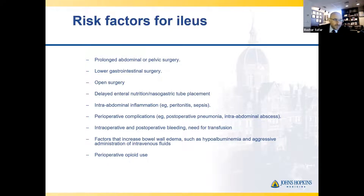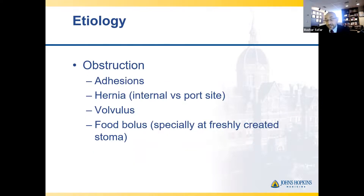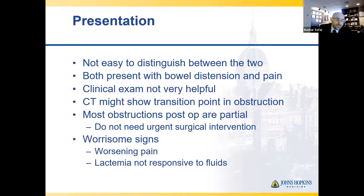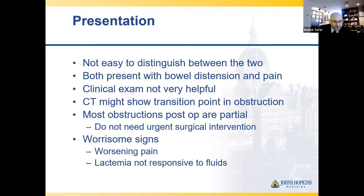Risk factors for ileus include excessive manipulation, bowel loss, lung surgery, anything that causes more inflammation, post-op complications such as abscess, use of perioperative opioids, and high IV fluid use post-operatively. For obstruction, the most common cause is adhesions, but also hernias — such as a port-site hernia — which can require operation. Volvulus and food bolus are much less common. Presentation is essentially the same between the two: patient is distended, unable to tolerate a diet, and may be vomiting. A CT scan can distinguish between them, especially if there is a transition point, which is much more suggestive of obstruction. However, most post-operative obstructions are partial and do not need urgent intervention.